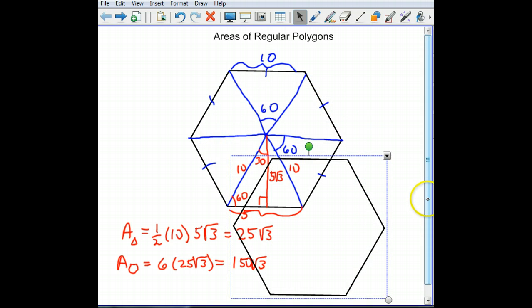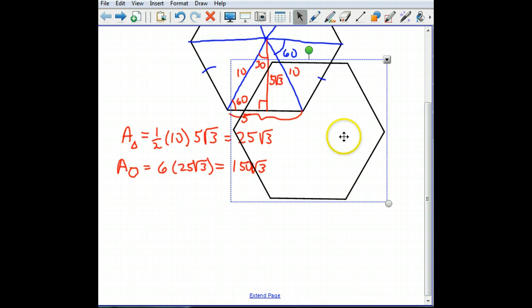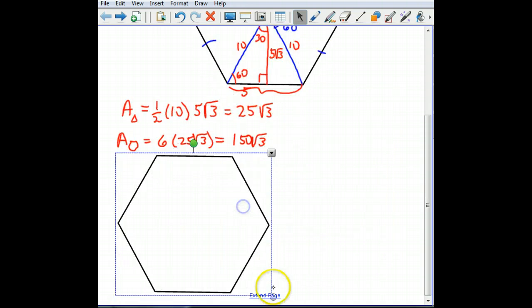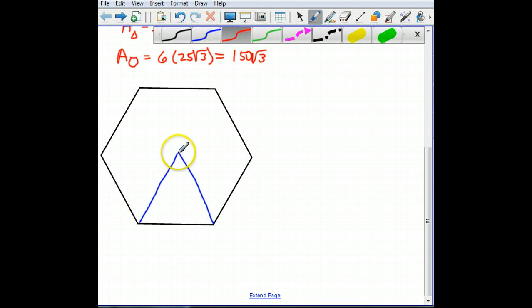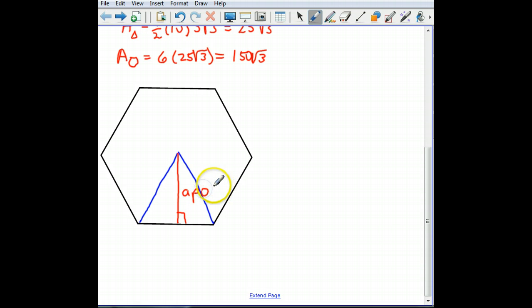Okay, so let me drop this down here. All right, so that segment that I drew from the center of the triangle to the side, or rather from the vertex of the triangle to the side of the polygon, that's called an apothem, A-P-O-T-H-E-M.